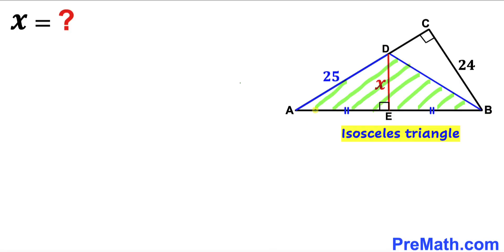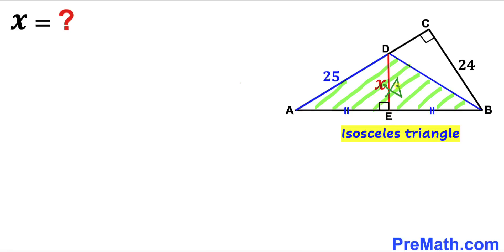Now let's make an observation. We can see that segment AE equals segment EB, and this angle is 90 degrees. Therefore we conclude that triangle ABD is an isosceles triangle. That means side length BD is equal to side length AD. Since AD is 25, BD is also 25 units.